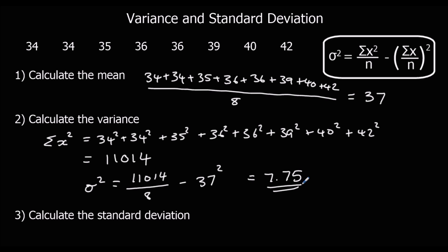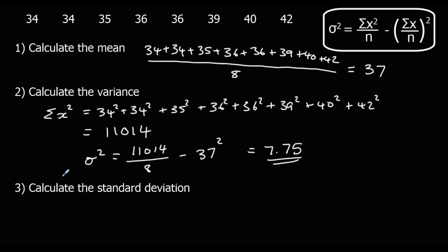The reason we're getting the same answer as the previous question is because all we've done is add 30 onto all the numbers. The spread is still the same — the variance is still 7.75. The mean has gone up by 30 because we added 30 to all the numbers, but the spread hasn't changed, so the standard deviation stays at 2.78 to 3 significant figures.